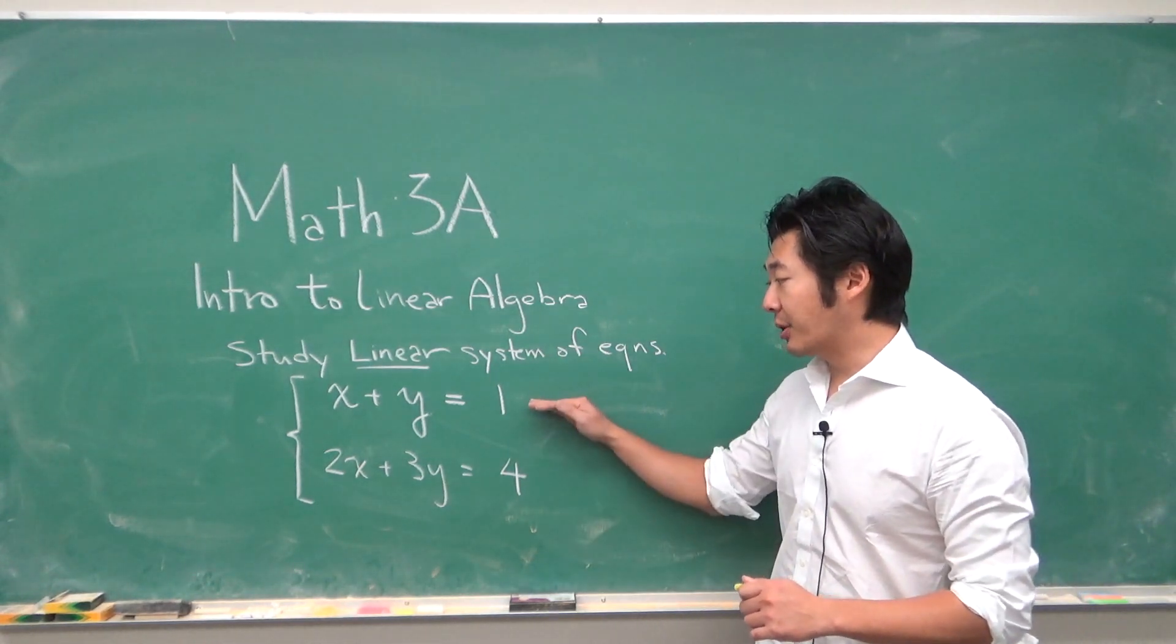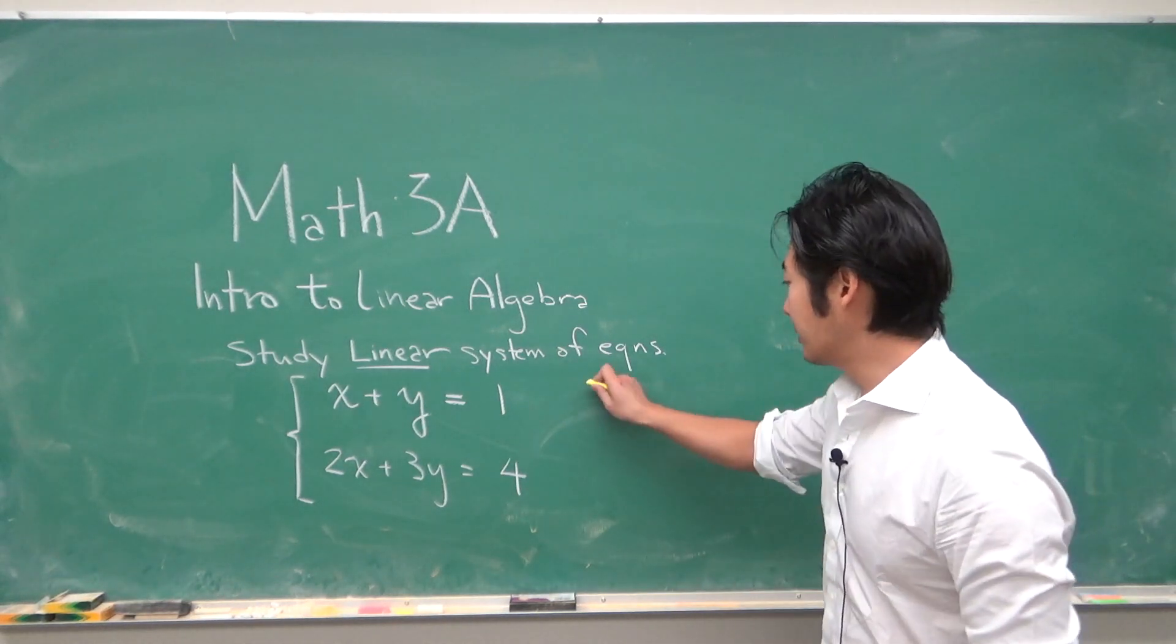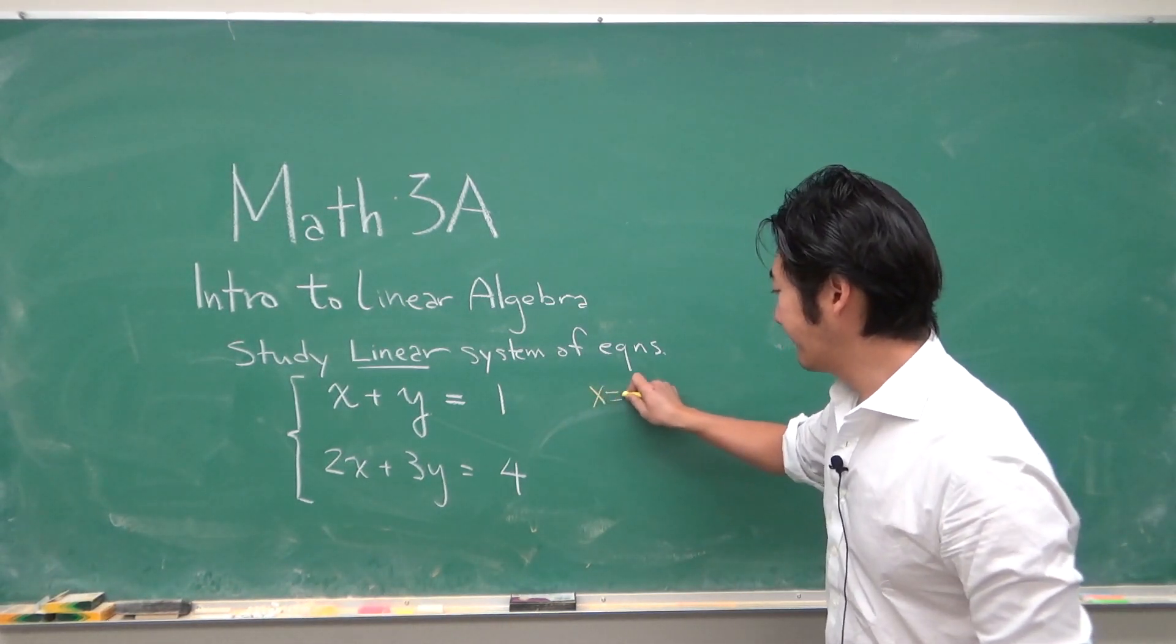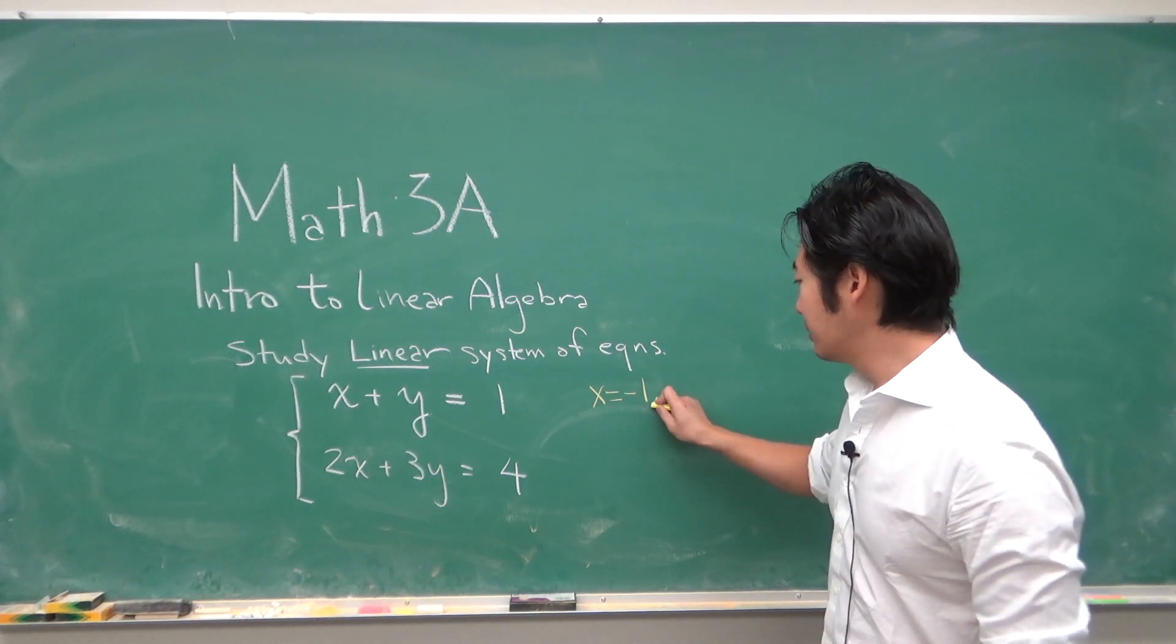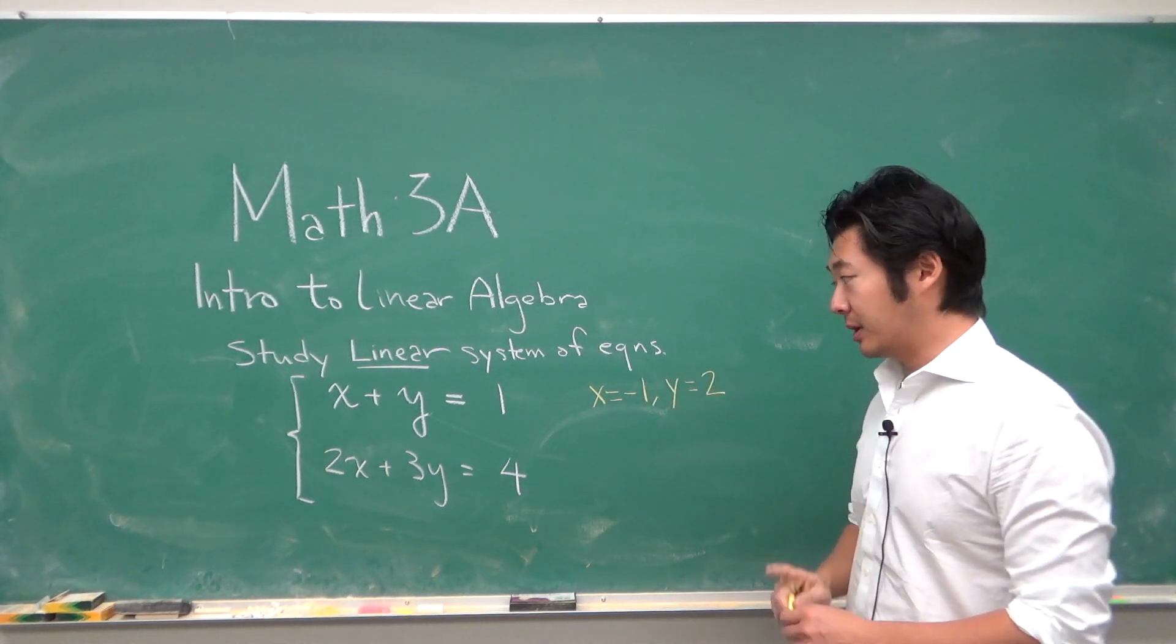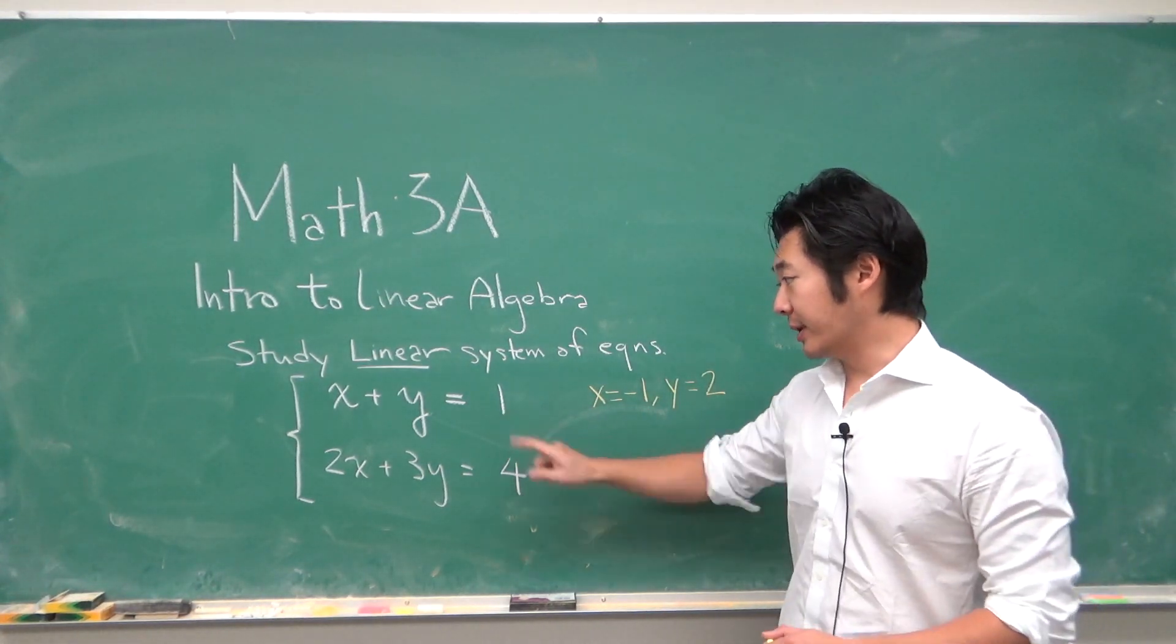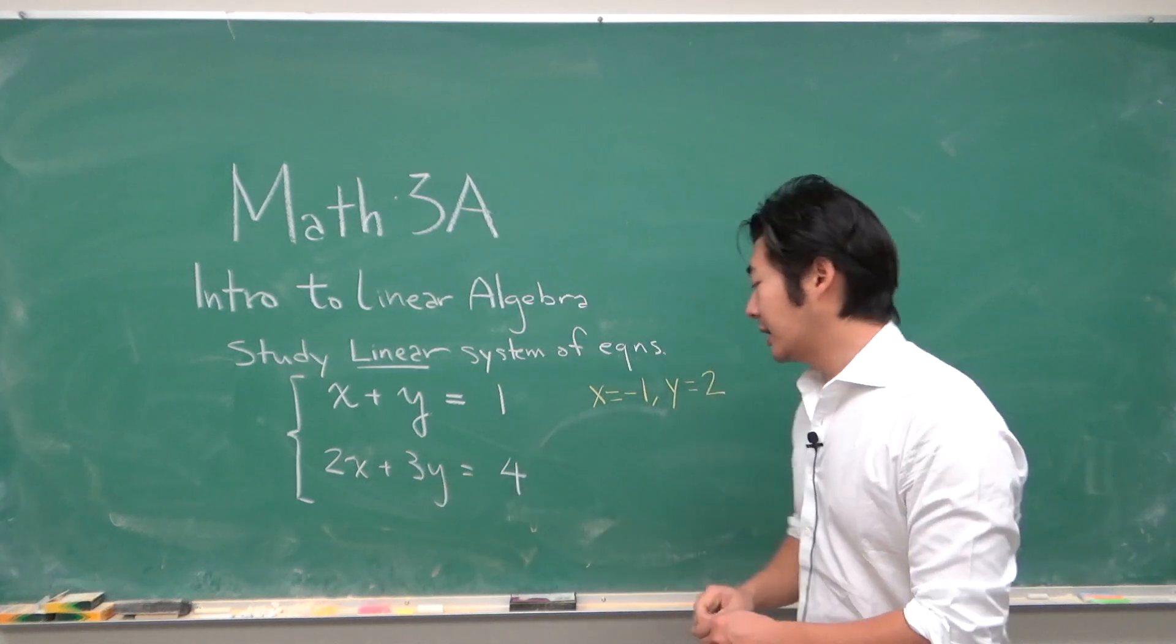So in this case, x equals negative 1 and y equals 2 will be a solution, because minus 1 plus 2 is 1. And then down here, if x is minus 1, then we have minus 2, plus if y is 2 we have 6 - 3 times 2 is 6.